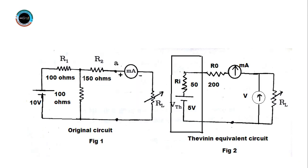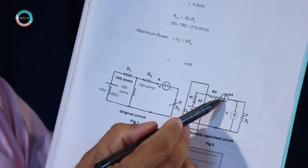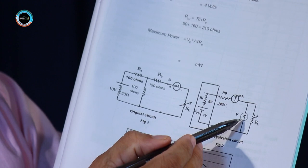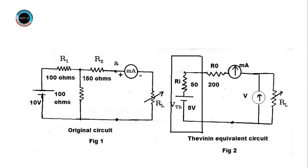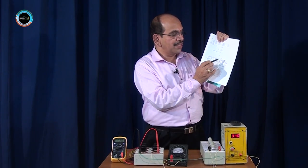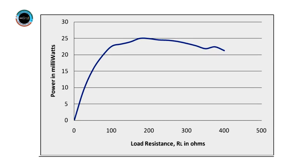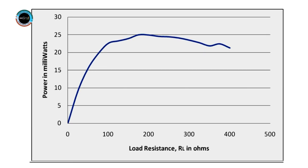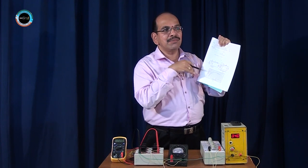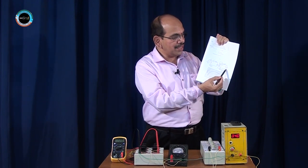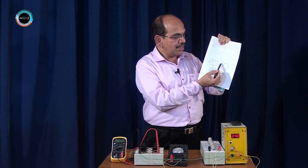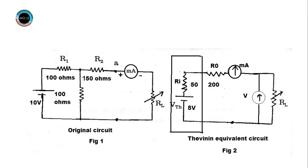Switching on the circuit and fixing the voltage at 4 volts, for different loads the current in the milliammeter and voltage in the voltmeter are noted. Load resistance is gradually increased: 25 ohms, 50 ohms, 75 ohms, and so on. Power is initially less, goes on increasing with increase of load resistance, reaches a maximum value, then starts decreasing. This proves experimentally that maximum power is delivered to the load when load resistance equals the internal resistance of 250 ohms, giving maximum power transfer at RL = 250 ohms.